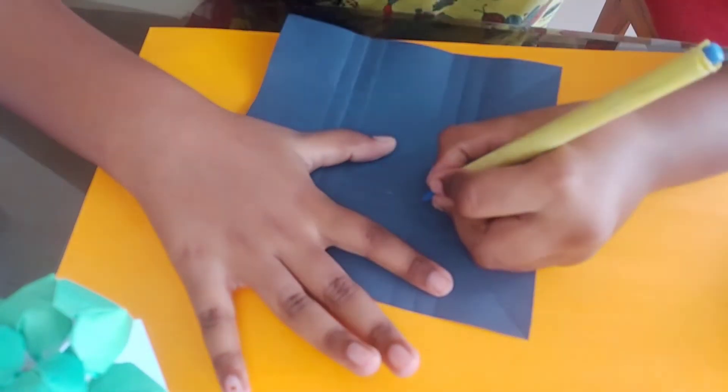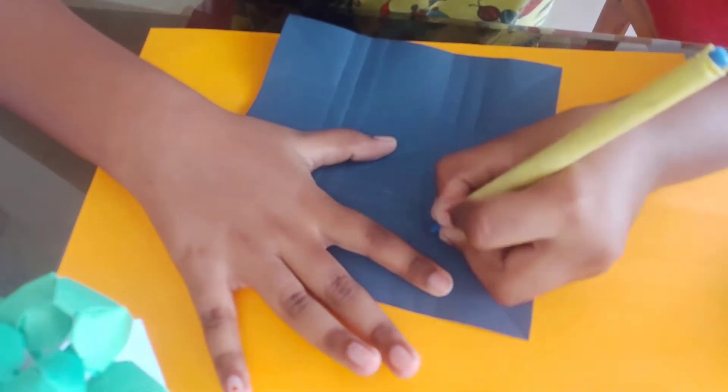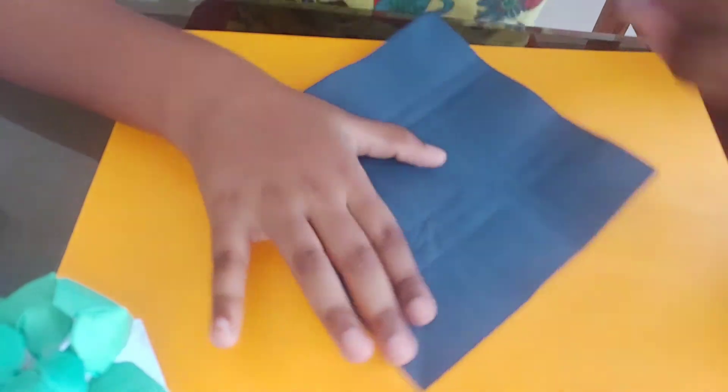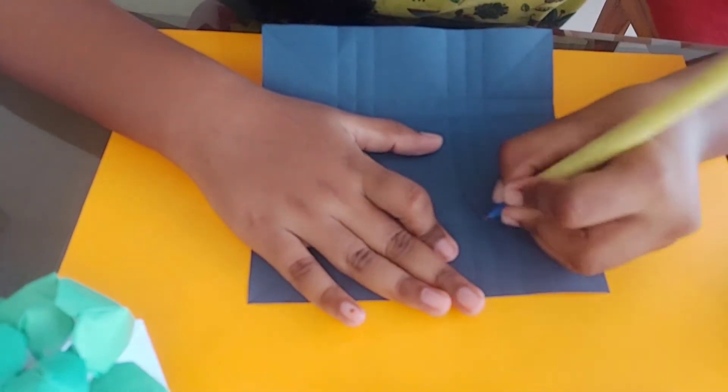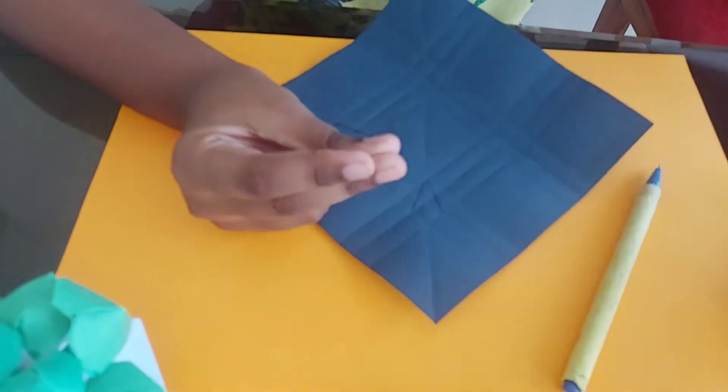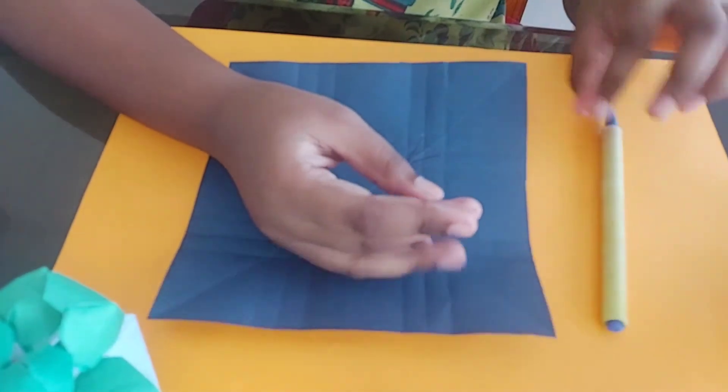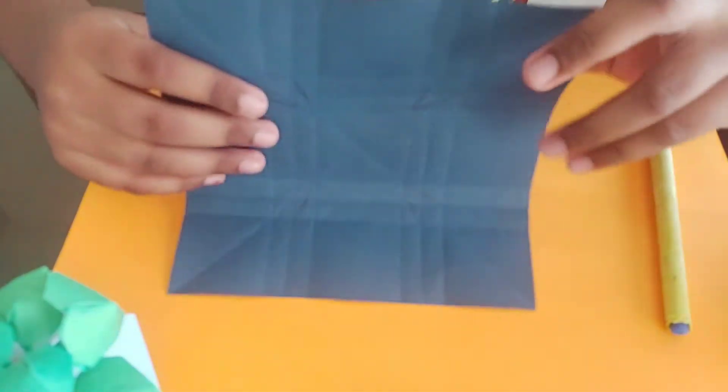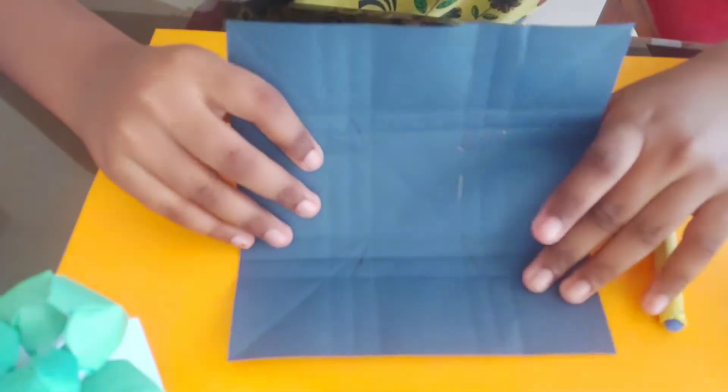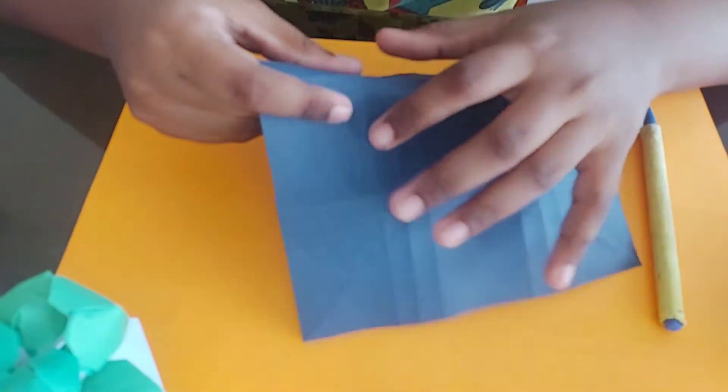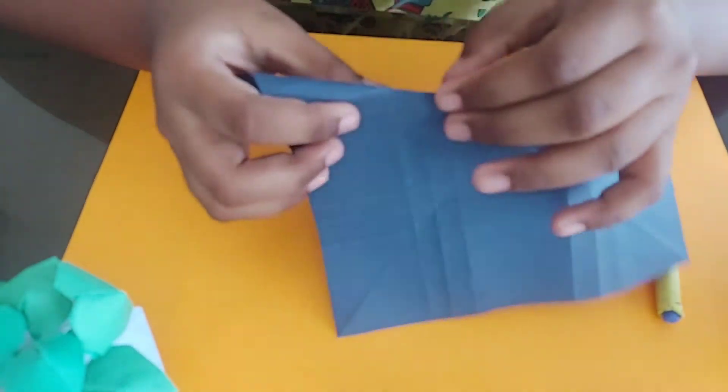I am drawing with a pen. Now we need to draw on the other side too. So now I drew all the lines. Now we need to turn the paper and fold those lines.